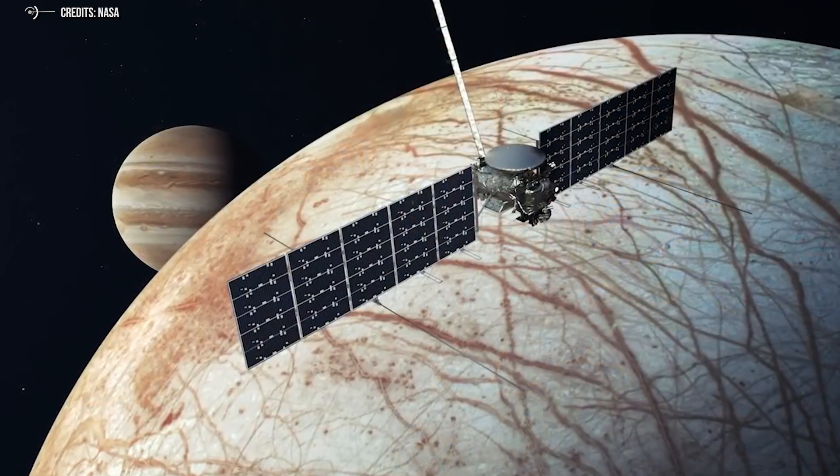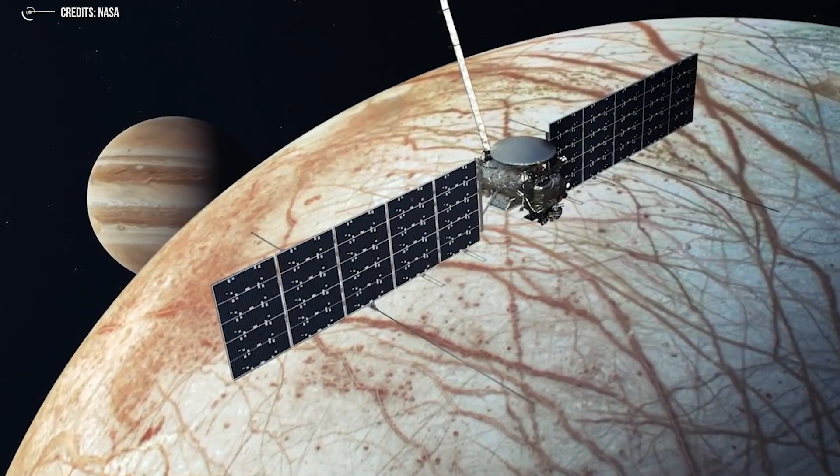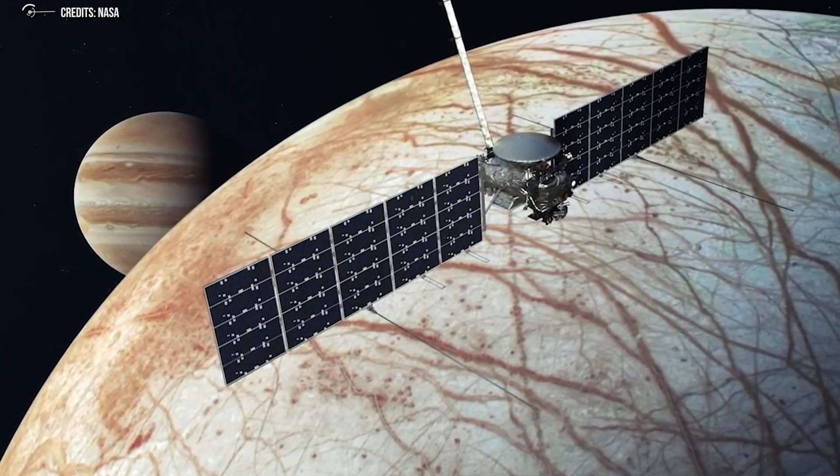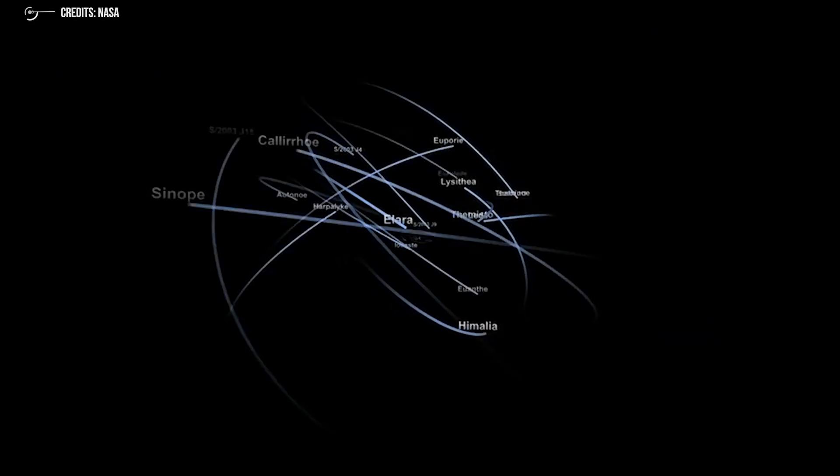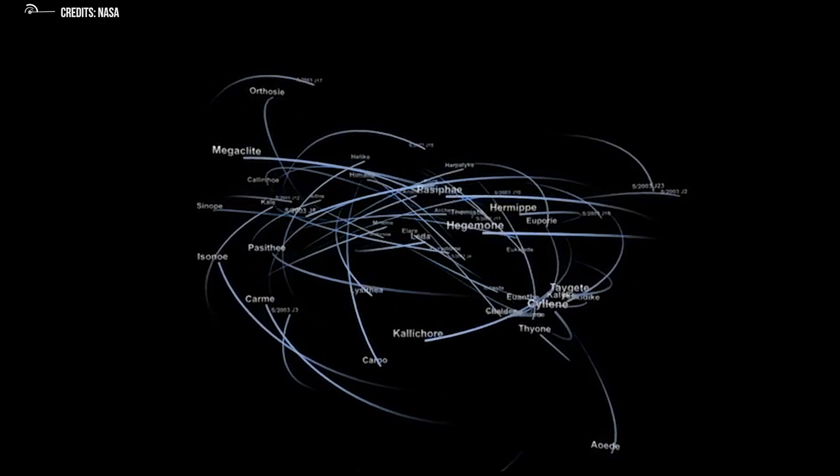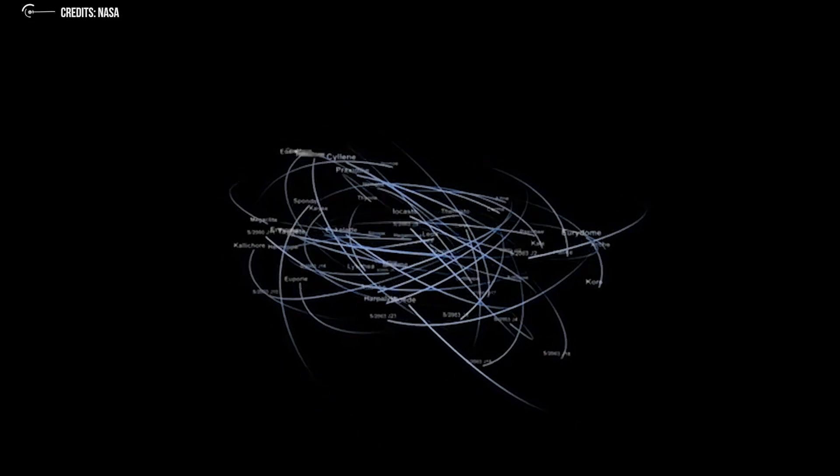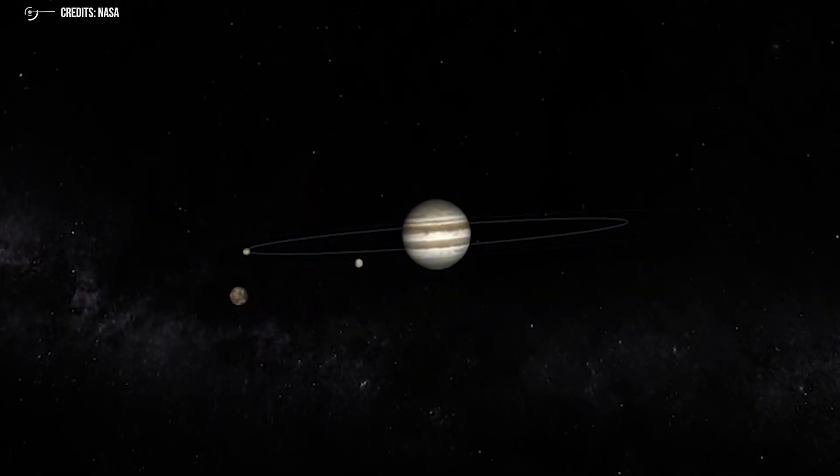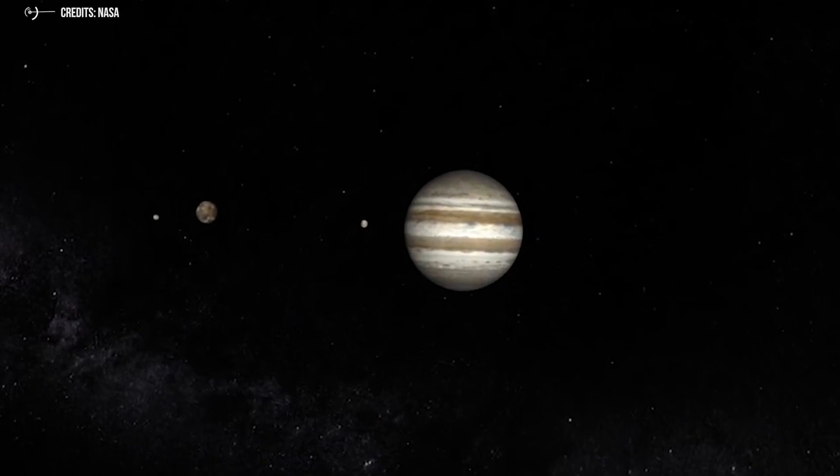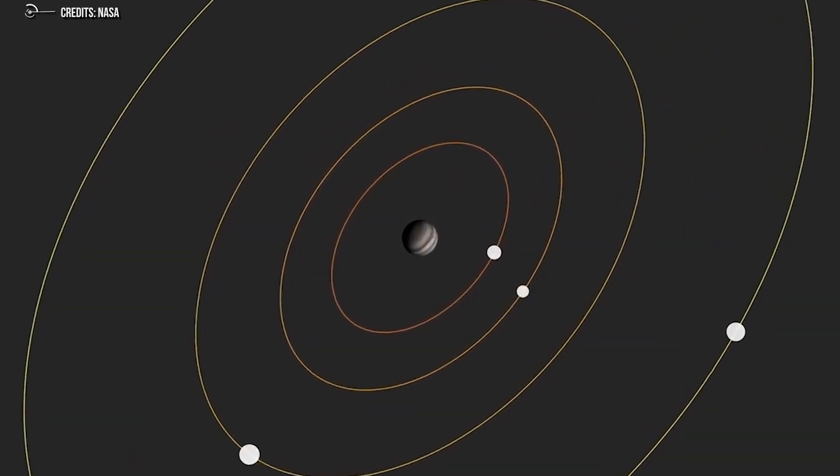This will be the first ever mission by humanity to explore an oceanic world besides Earth. The Clipper spacecraft will perform 50 close flybys of Europa from its lengthy orbit around Jupiter. Europa Clipper will help us comprehend the potential for life on ocean worlds in our solar system and beyond by evaluating whether Europa has three basic requirements for life to exist: a source of energy, a liquid solvent like water, and elements that can form complex molecules and organisms.